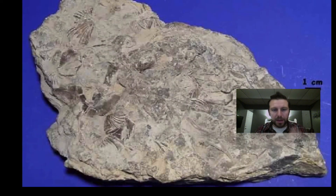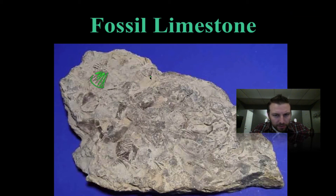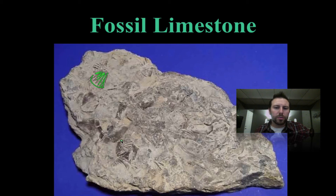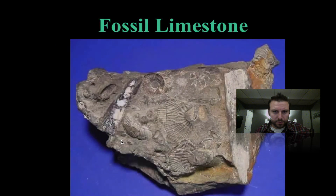Here we have fossil limestone — you can see little shell fragments all over it. It had a huge abundance of fossils or shell fragments that compacted and fossilized over time. Here's another example of fossil limestone where you can clearly see those fragments.